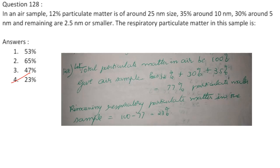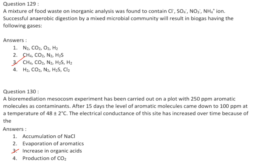In an air sample: 12% particulate matter is around 25 nm size, 35% around 10 nm, 30% around 5 nm, and remaining are 2.5 nm or smaller. Total accounted for is 12 + 35 + 30 = 77%. Remaining respiratory particulate matter is 100 − 77 = 23%. Answer is option D, 23%.